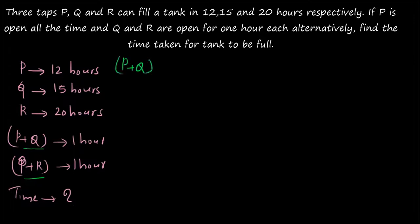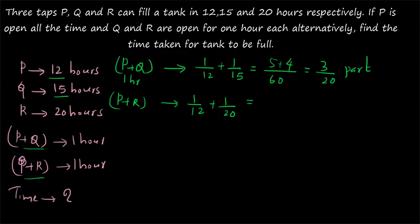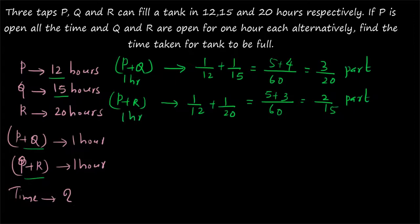P plus Q fills 1/12 plus 1/15 in one hour. The LCM of 12 and 15 is 60, so 5 plus 4 gives 9/60, which simplifies to 3/20. So P plus Q fills 3/20 part in one hour. For P plus R: 1/12 plus 1/20. The LCM of 12 and 20 is 60, so 5 plus 3 gives 8/60, which simplifies to 2/15. So P plus R fills 2/15 part in one hour.